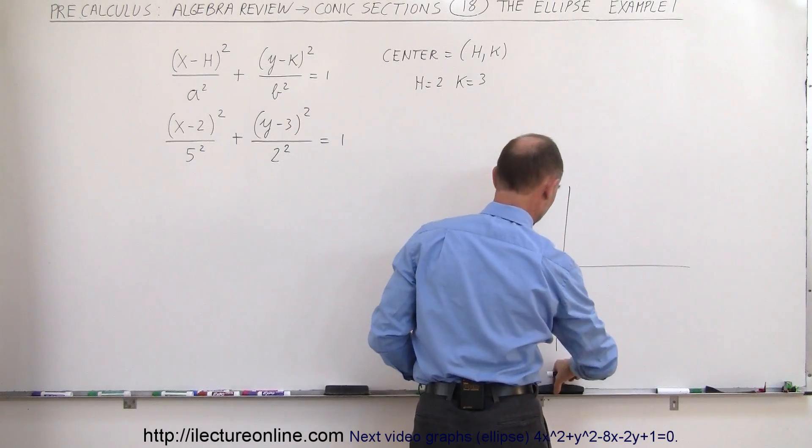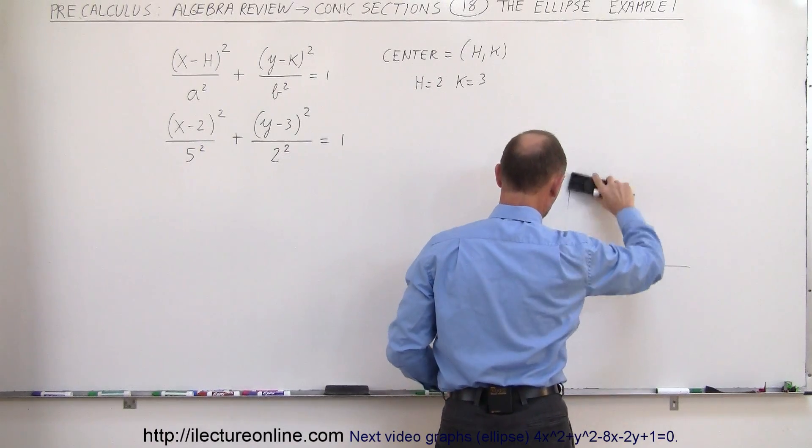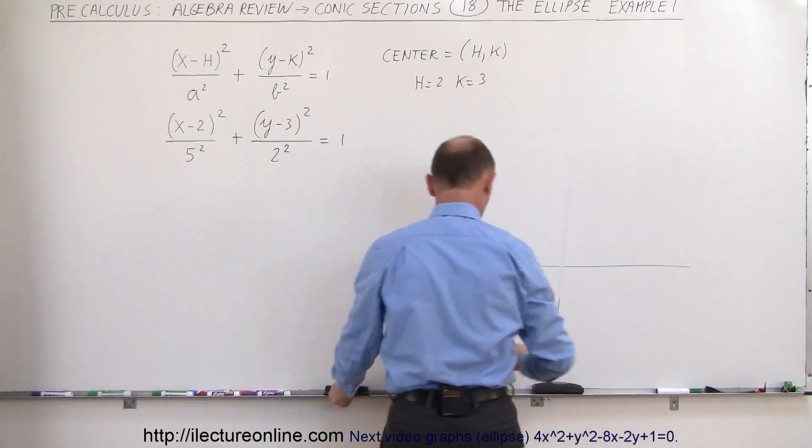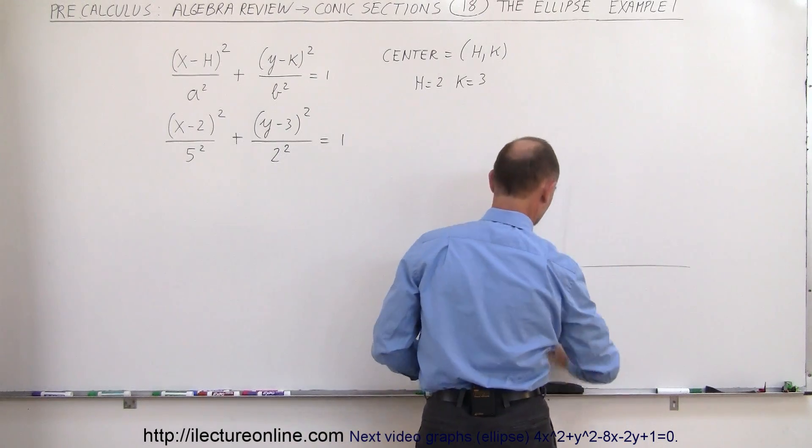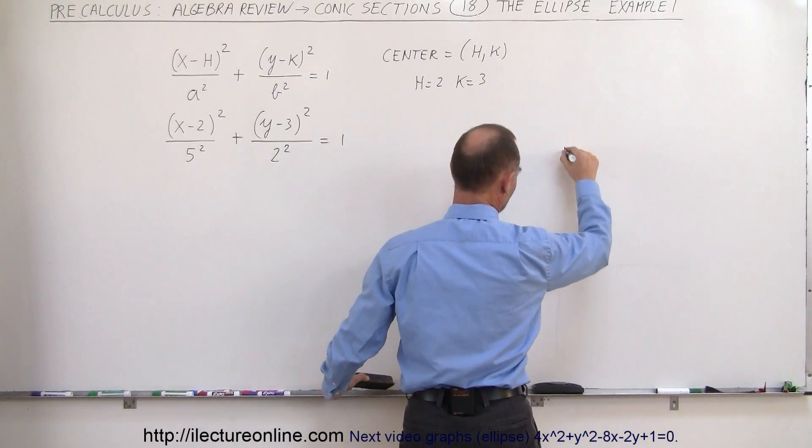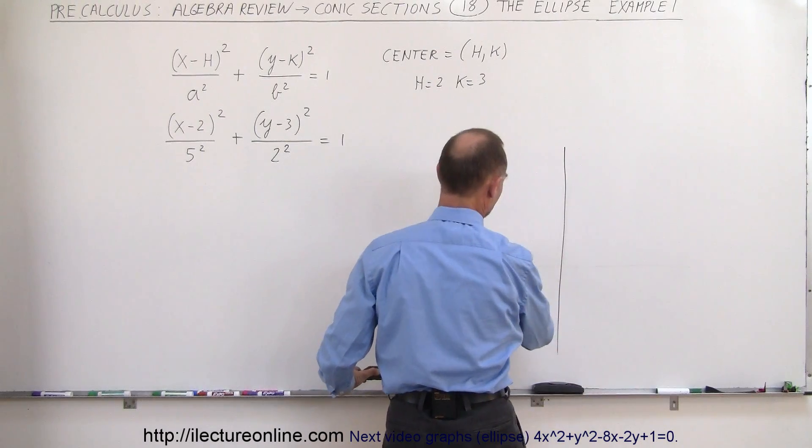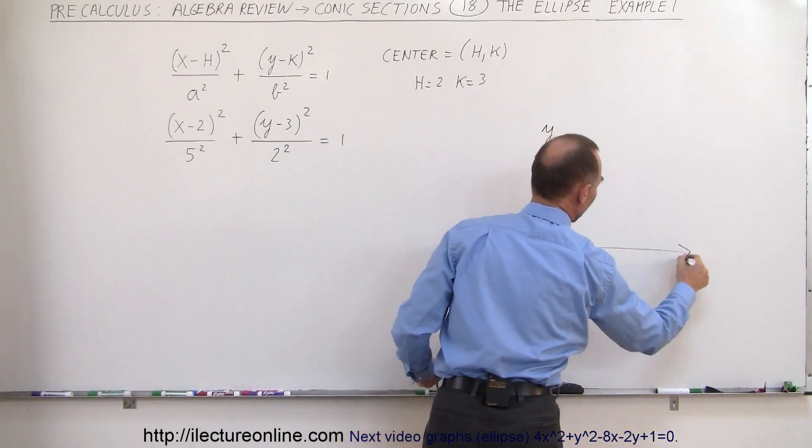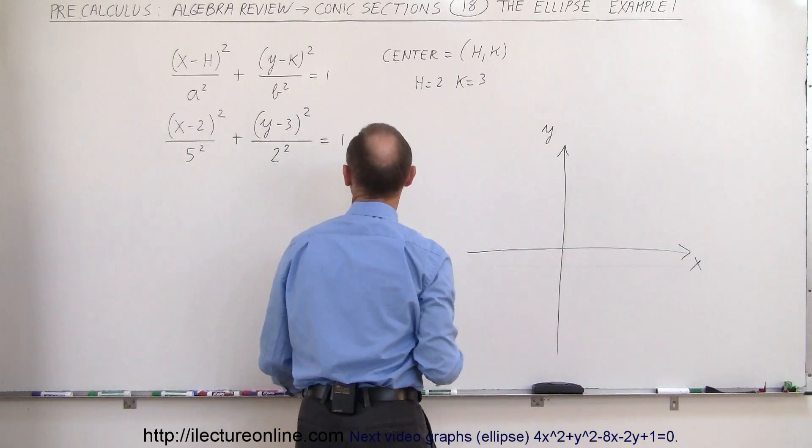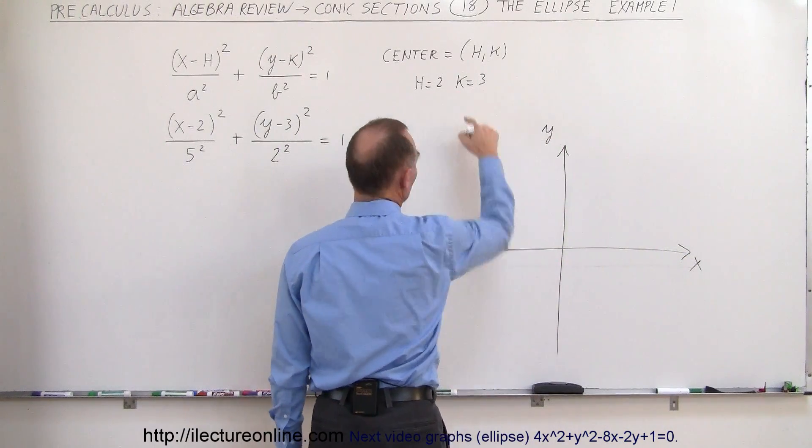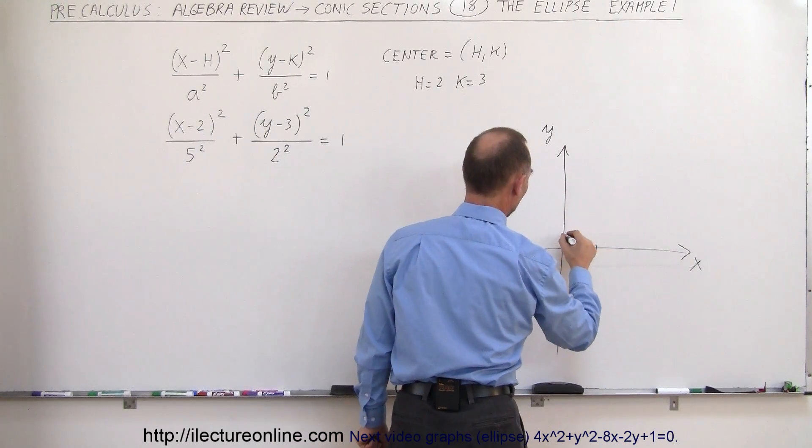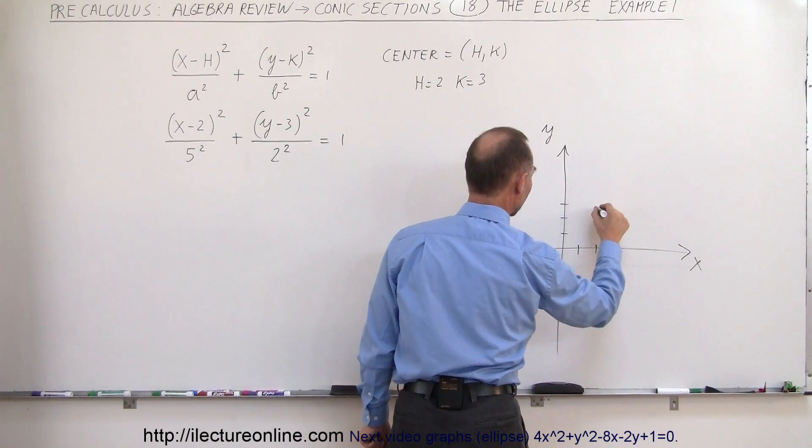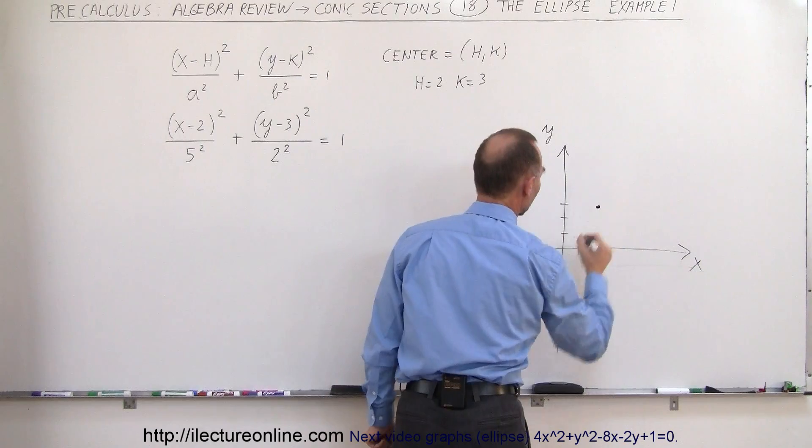So there's our... not a very straight axis is it? Let me try this again. There, let's start over. Okay, that's better. And there we go, so there's our y-axis, there's our x-axis and the center is at 2 and 3. So we go x equals 1, 2, y equals 1, 2, 3. So that's the location of the center.